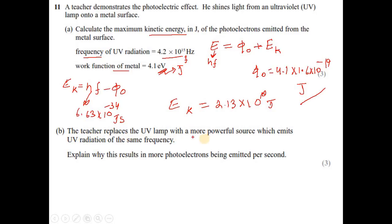Part B. The teacher replaces the UV lamp with more powerful source which emits UV radiation of the same frequency. Explain why this results in more photoelectrons being emitted per second. Increasing powerful source means power of the source is increased, that means intensity is increased. Increasing intensity means number of photons are increased. More photons are coming from the source. Photoelectric effect is one-to-one interaction between photon and electrons. The photons are increased, so number of electrons should be increased.